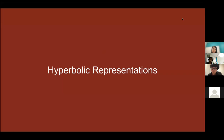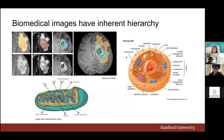An audience member comments: The brain tumor slide doesn't really show a hierarchy — it's a heterogeneous tumor with edema around it. Just because something has a bunch of components doesn't mean it's due to a structured hierarchy; it could just be a heterogeneous object. Jeffrey responds: That's a good point. We can get to that later when we talk about hyperbolic representations and when they're useful.